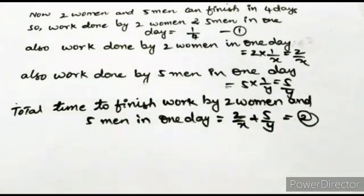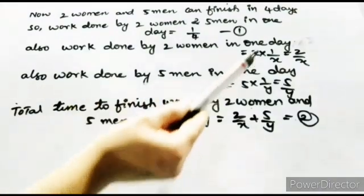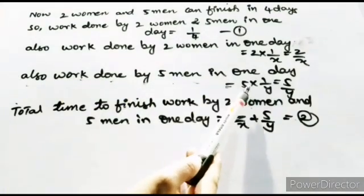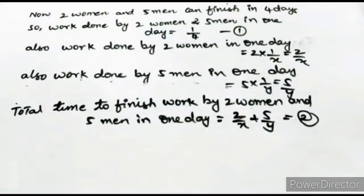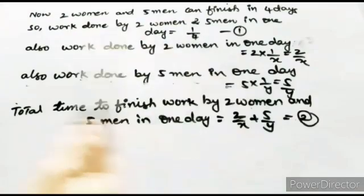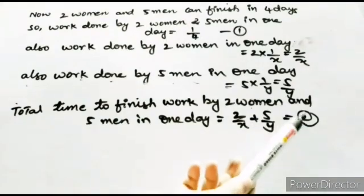Two women and five men can finish in four days — that is our first equation. Work done by two women and five men in one day is 1/4. Work done by two women in one day is 2 × (1/x) = 2/x, and work done by five men in one day is 5 × (1/y) = 5/y. So total work by two women and five men in one day: 2/x + 5/y = 1/4.